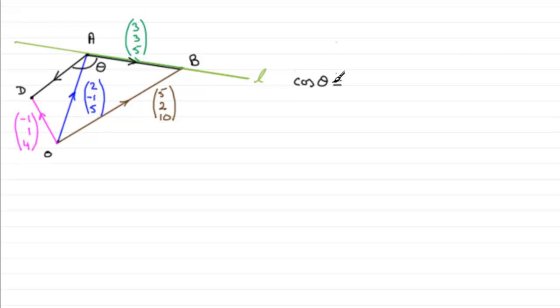So cos theta equals what is called AD dotted with the vector A to B. It doesn't matter whether you do AB dotted with AD the other way round, it still gives you the same result, but these direction vectors must come away from your point A. And we divide this by the magnitude of the vector AD and the magnitude of the vector AB.